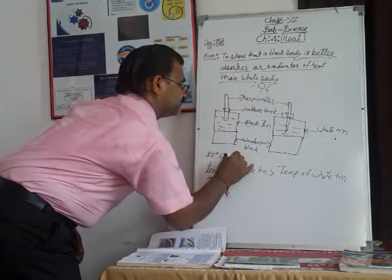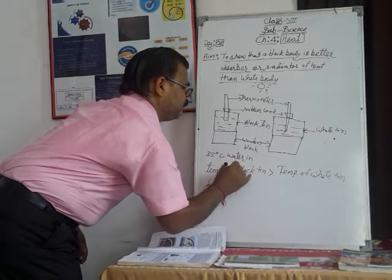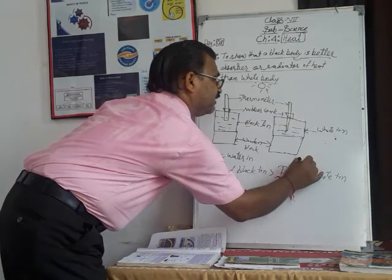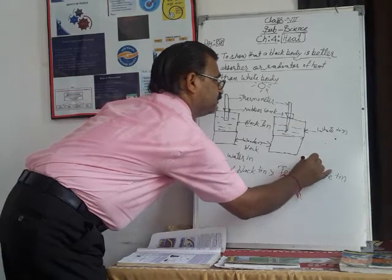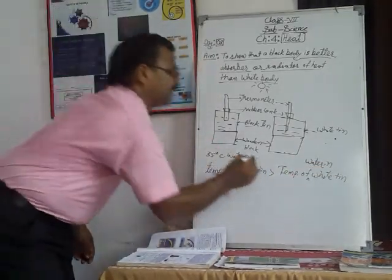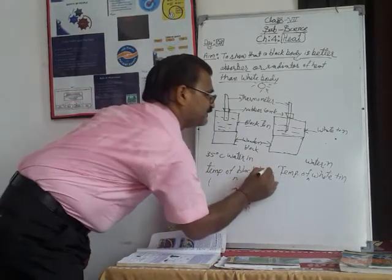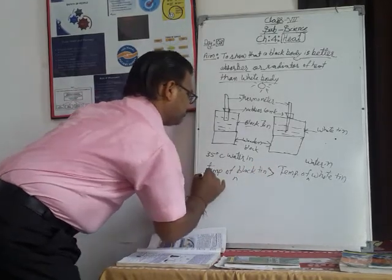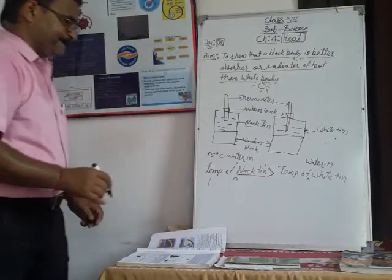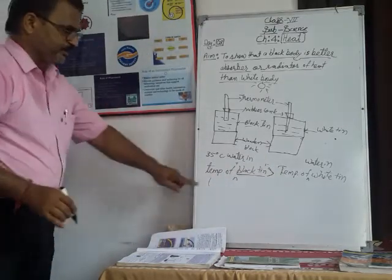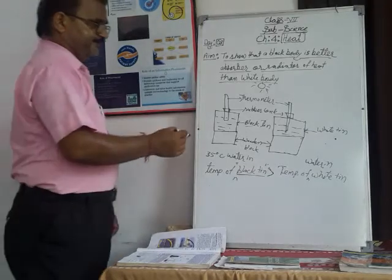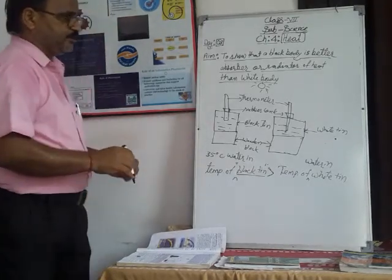After one hour, when we observe, we see that the temperature of water in the black tin is more than that in the white tin. This means the black object heated up faster. This completes the first part of the experiment.